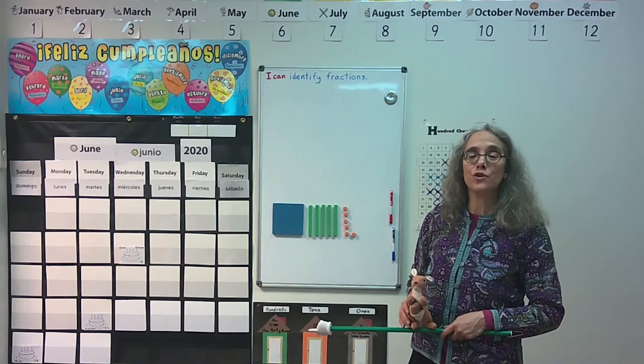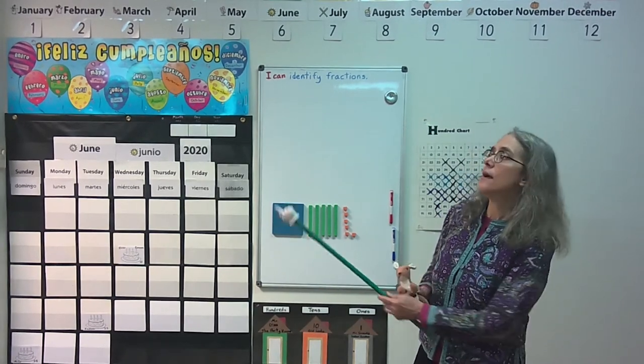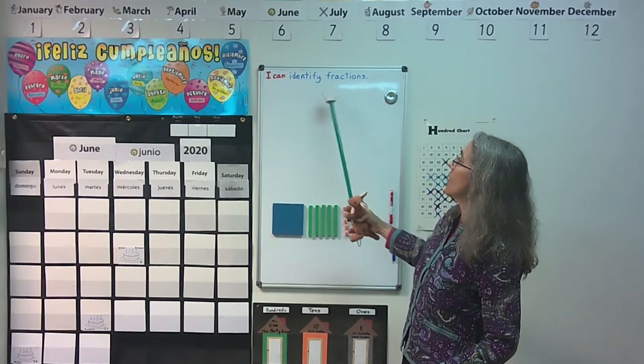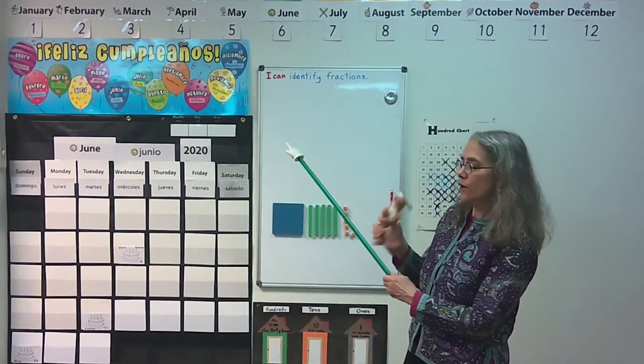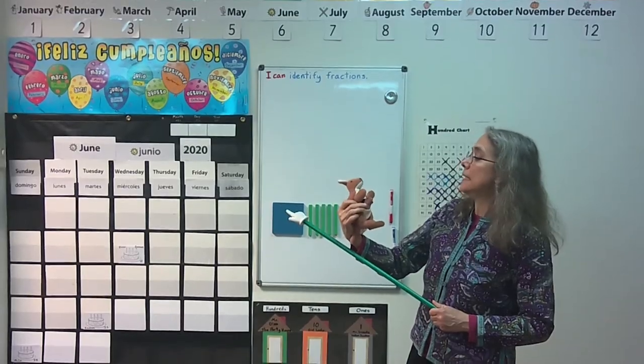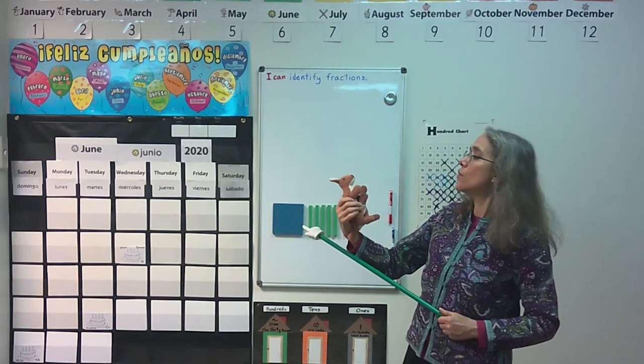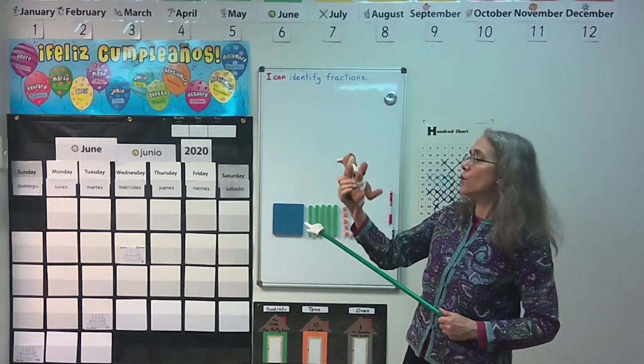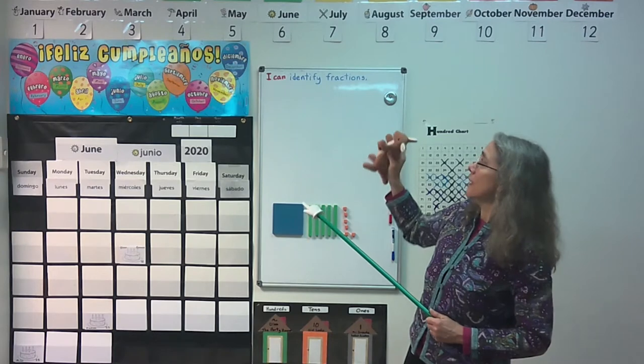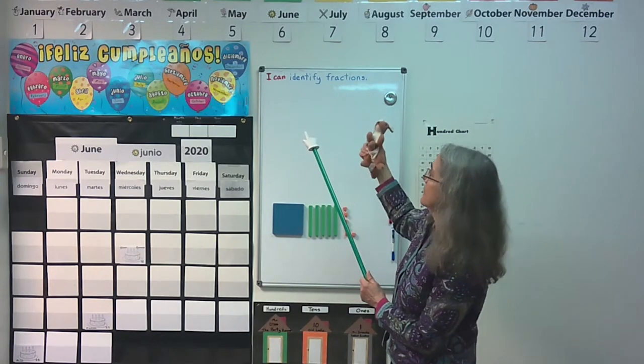Welcome to the first day of June. We have a new number corner for June. Our goal for this month is I can identify fractions. What are fractions? I've never heard of those before. Well, Rue, in this case we're going to talk about fractions as equal parts of a shape. Oh, cool! I love shapes. Can I identify the month? Identify? I know what that means, it means tell what it is. Find its identity.